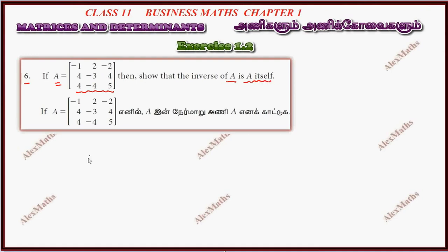Now A inverse is going to be A. So we need to show that A inverse equals A. Let's prove A inverse is going to be A. The first part is the determinant of A. So determinant A — we expand along the first row, starting with the first element.